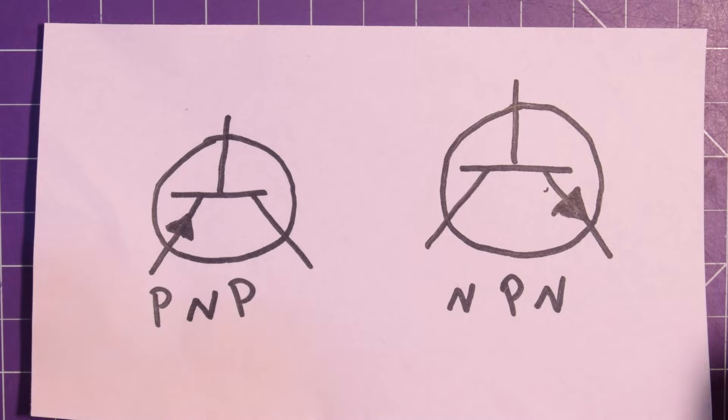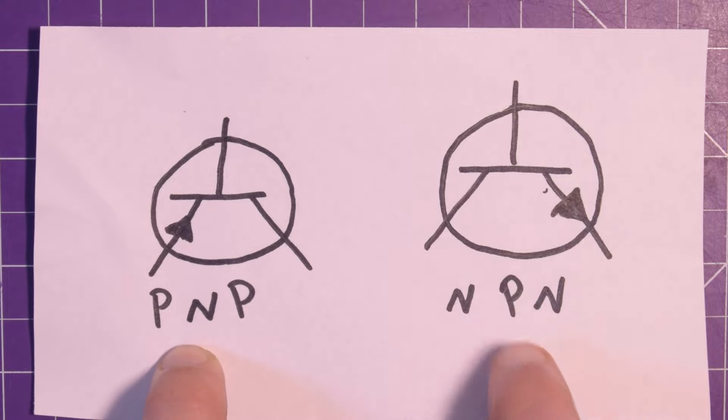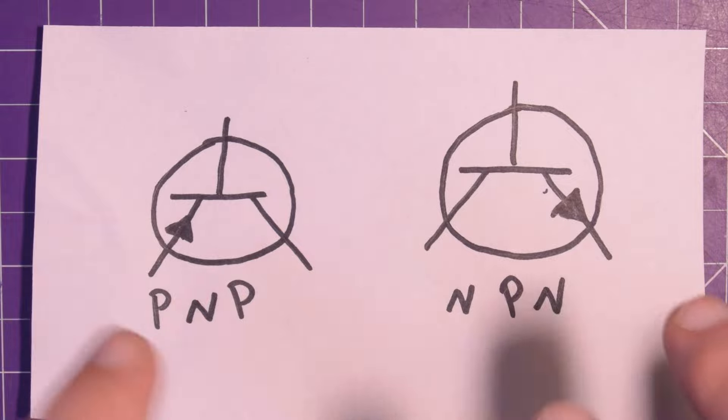When you're first getting started with transistors, pretty much the most important thing you need to know is the type of transistor you have. Now in basics there's only really two kinds you have to worry about: PNP and NPN. The big difference for beginners is just the way you're going to use it.